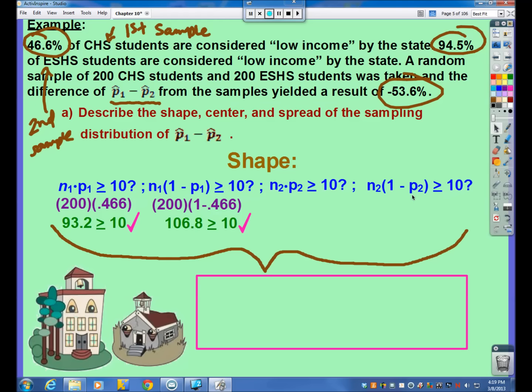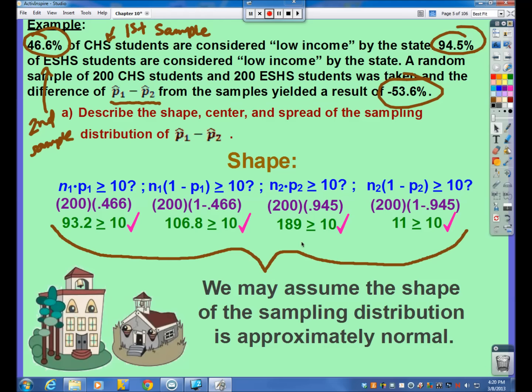Now, I've got to use my second sample values for ESHS. So, again, my N is 200. My proportion is the 0.945 from here. And that value is 189, which is greater than or equal to 10. And do my 1 minus P2, and I get 11. Very close, but it is greater than or equal to 10. So, since all four of these check out, and this is an all or nothing thing here. Since all of these check out, we may assume the shape of the sampling distribution of the differences of the proportions is approximately normal, which will allow us to later to use normal CDF in our calculations.